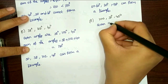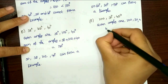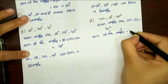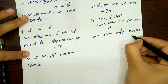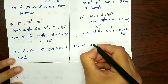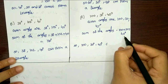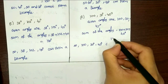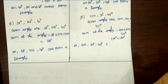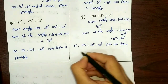Part (f): given angles are 100 plus 30 plus 45. So 100 plus 30 is 130, and 130 plus 45 is 175. So exactly 175, which is below 180. Therefore, 100, 30, and 45 cannot form a triangle.